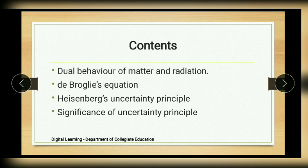One of the major drawbacks of Bohr's theory is that it could not account for the dual nature of electron. Dual nature means electron can behave as a wave and as a particle, but Bohr considered only the particle nature of the electron.